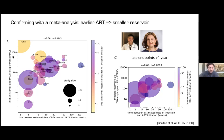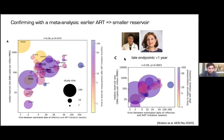In the meta-analysis, the x-axis shows time between estimated date of infection and ART initiation; each dot is a study sized by number of individuals; the y-axis is reservoir size. There's a correlation: the later you start ART, the bigger the reservoir. But there are outliers — individuals whose reservoir was measured pretty soon after starting therapy. If you remove studies that measured people before about a year of therapy, you get an even stronger correlation showing the system hasn't equilibrated yet.